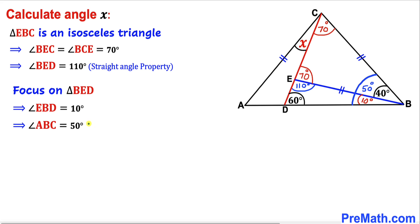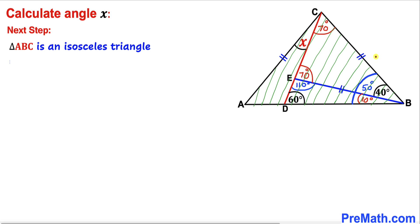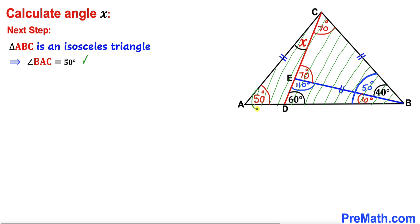Therefore this angle ABC turns out to be 50 degrees. Here's our next step: let's focus on this big triangle ABC. We know that this is an isosceles triangle because this side length is equal to this side length. Therefore this angle has got to be equal to this angle. We know that this angle is 50 degrees, so therefore this angle has got to be 50 degrees as well. Therefore our angle BAC is 50 degrees.